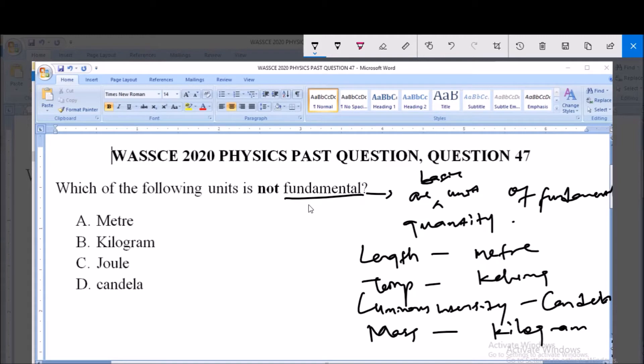Now from this you see that option A is a fundamental unit, the unit of length. Likewise B, kilogram, is a fundamental unit, the unit of mass. And D, candela, is a fundamental unit, the unit of luminous intensity.